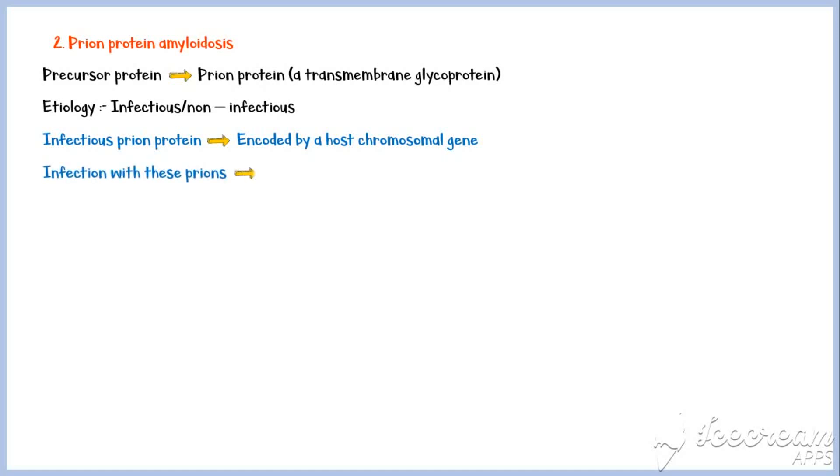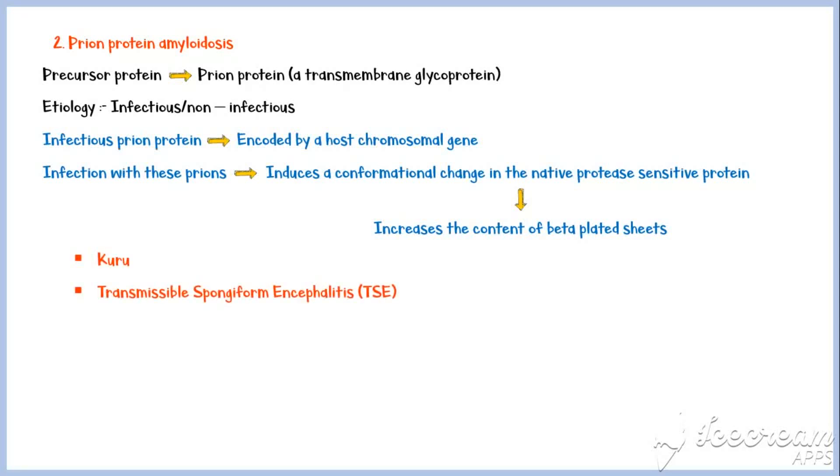Infections with these prion proteins induces a conformational change in the native protease-sensitive protein, which increases the content of beta-plated sheets and subsequent amyloid deposition. Common conditions associated with the infectious type include Kuru and transmissible spongiform encephalitis.